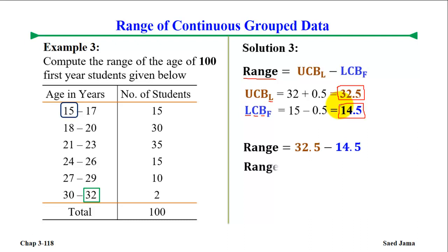Therefore, the range is equal to 32.5 minus 14.5, which gives us 18. So the range is equal to 18 years.